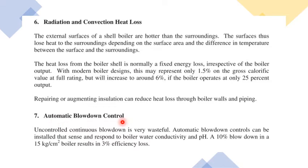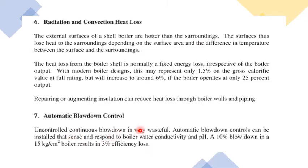The seventh point is automatic blowdown control. There are two types of blowdown — intermittent and continuous. Uncontrolled continuous blowdown is very wasteful. Automatic blowdown controls can be installed that sense and respond to boiler water conductivity and pH. As a reference, a 10% blowdown in a 15 kg/cm² boiler results in a 3% efficiency loss, so controlling blowdown is essential.